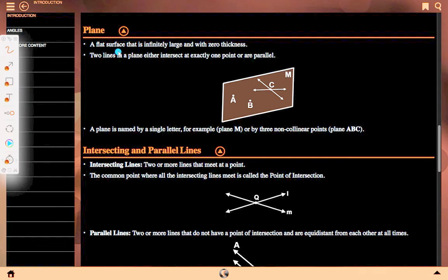Plane: A flat surface that is infinitely large and with zero thickness. Two lines in a plane either intersect at exactly one point or are parallel. A plane is named by a single letter, for example plane M, or three non-collinear points, plane A, B, C.